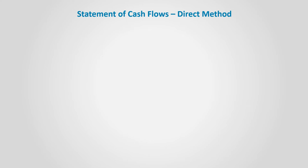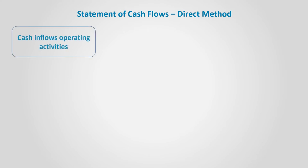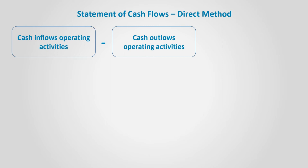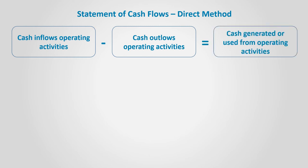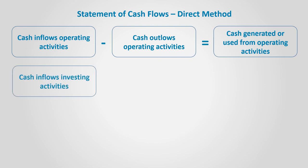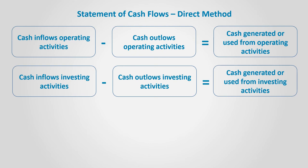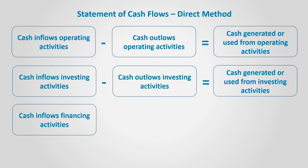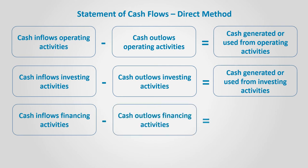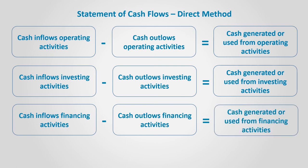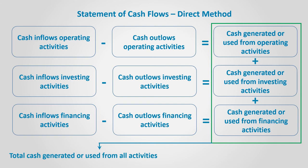To summarize the process of preparing the statement of cash flows using the direct method: we get the cash flow from operating activities by subtracting the cash outflows from cash inflows from operating activities to get the cash generated or used from operations. We calculate the cash flows from investing activities by subtracting the cash outflow from the cash inflow from investing activities to get the cash generated or used from investments. We calculate the cash flows from financing activities by subtracting the cash outflow from the cash inflow from financing activities to get the cash generated or used from financing activities. By adding the cash generated or used from operating, investing, and financing activities, we get the total cash generated or used from all activities.